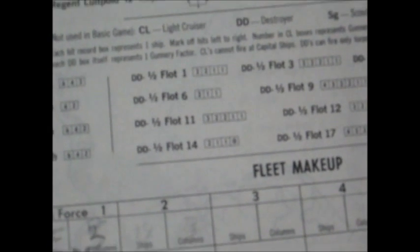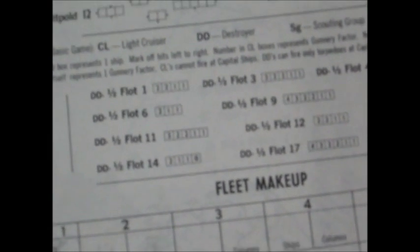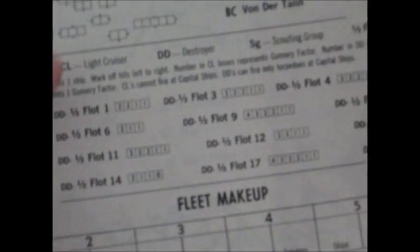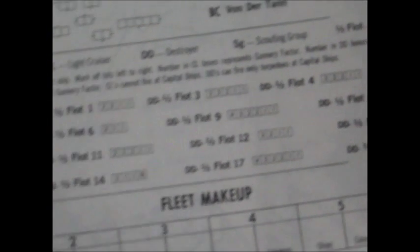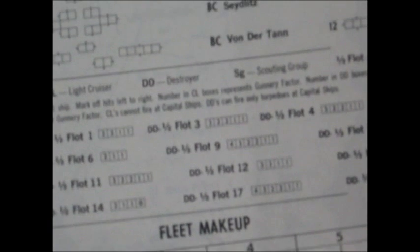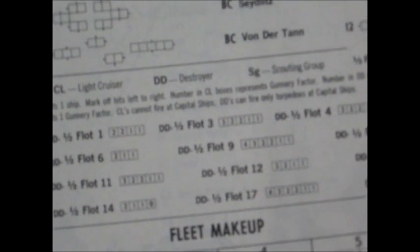In the advanced game, you don't use the gunnery factors that are on the counters. You use what's on the German hit record. In this case, we have the Prince Regent Leutpold firing at the Royal Oak. You count the number of boxes. In this case, she can use her entire broadside. So it's three, five, seven. She can fire on the twelve table. That's what she will be doing, firing on the twelve table.